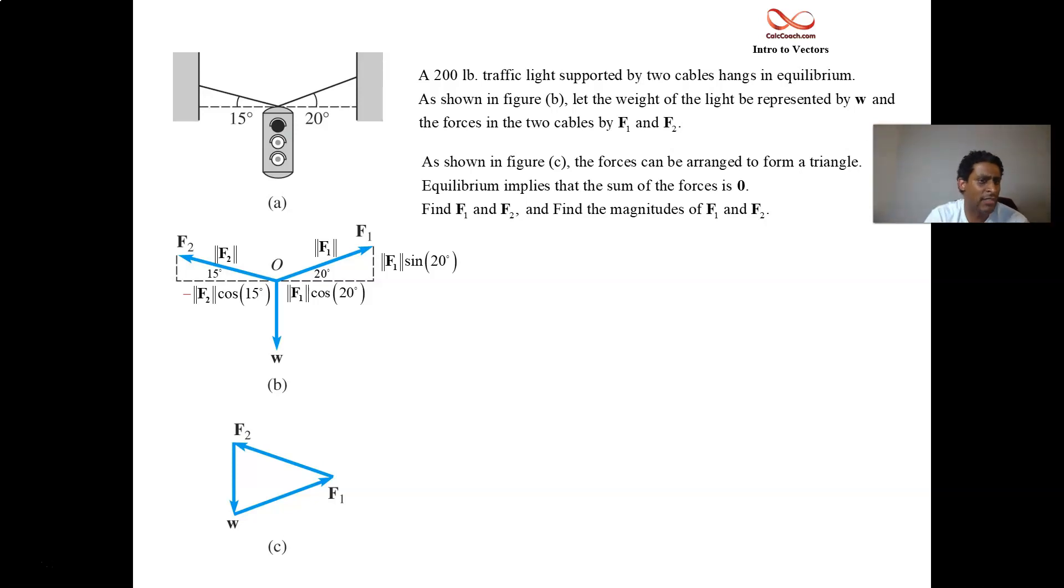What about the J component? Same using sine. No need to force that to be negative. That's a positive. So F2 sine of 15. We have the I and J components of F1 and F2.